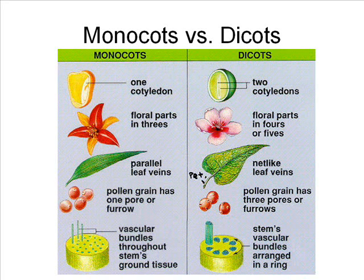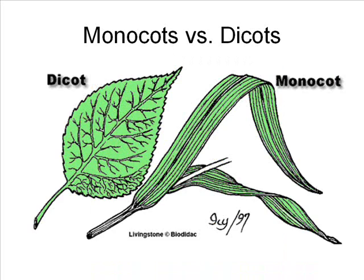There are also other important differences between these two groups of angiosperms. First, monocots have flower parts like stamens and petals in multiples of three. Dicots have floral parts in multiples of either four or five. Dicot leaves usually have a net-like arrangement of leaf veins, whereas monocot leaves have a parallel vein structure.